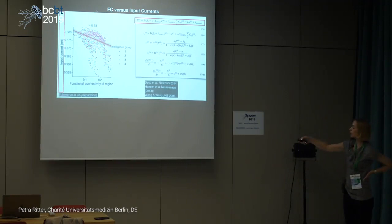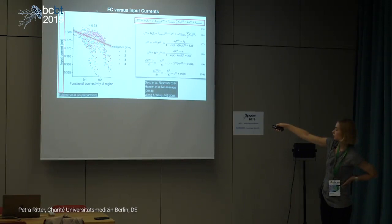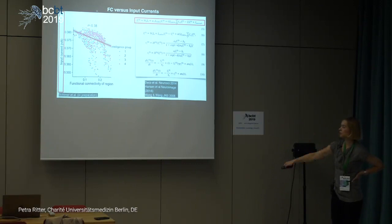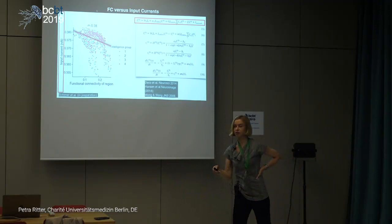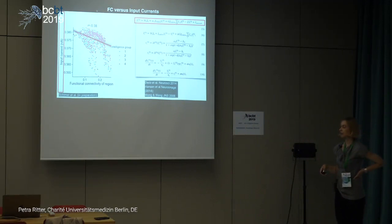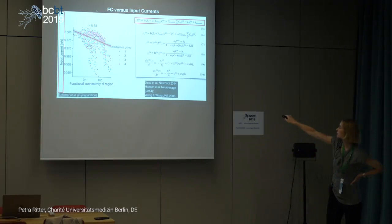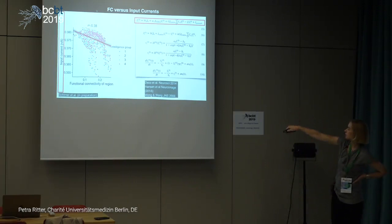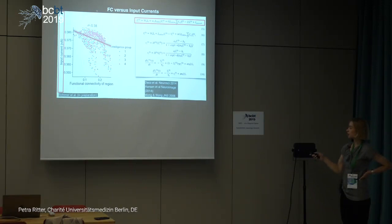For working memory: stimulating one of the two competing excitatory populations with a sufficiently strong stimulus drives it into a persistent attractor state. Injecting a subsequent current into the distractor population after two seconds produces three scenarios: the memory trace is maintained, it is disrupted, or no memory trace was formed in the first place. We can then look at how input current strength and correlation relate to these scenarios across low and high intelligence groups.